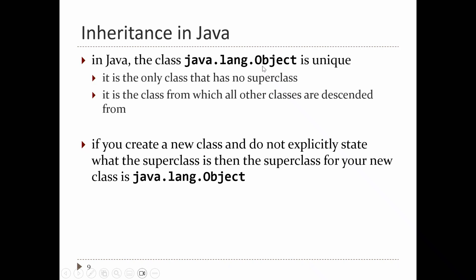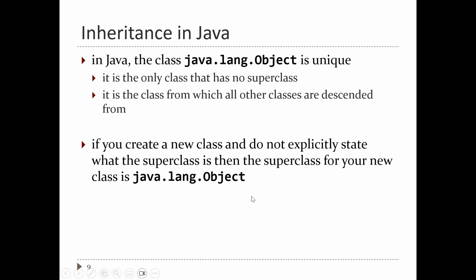In Java, the class Object is unique — it's the only class with no superclass, sitting at the top of the inheritance hierarchy. Every class in Java is descended from Object. When you make a new class and don't specify a superclass, the compiler assumes the superclass is java.lang.Object. Even though we've made lots of classes in this course and never mentioned Object in the class declaration, the compiler is doing that for us.